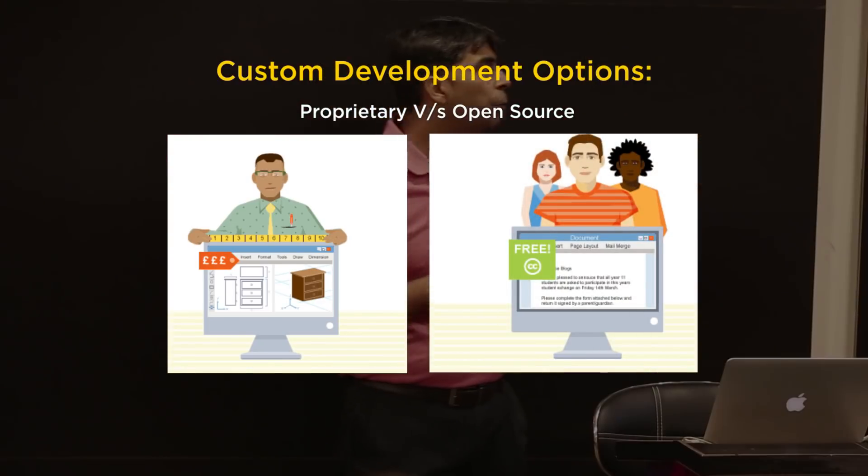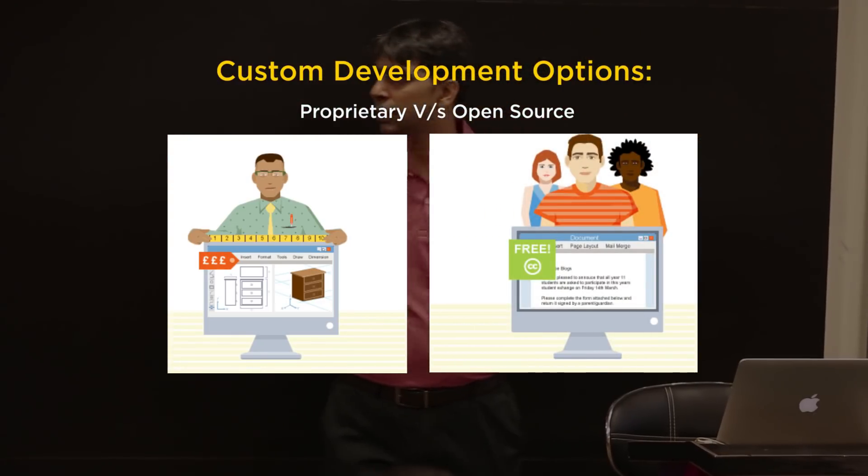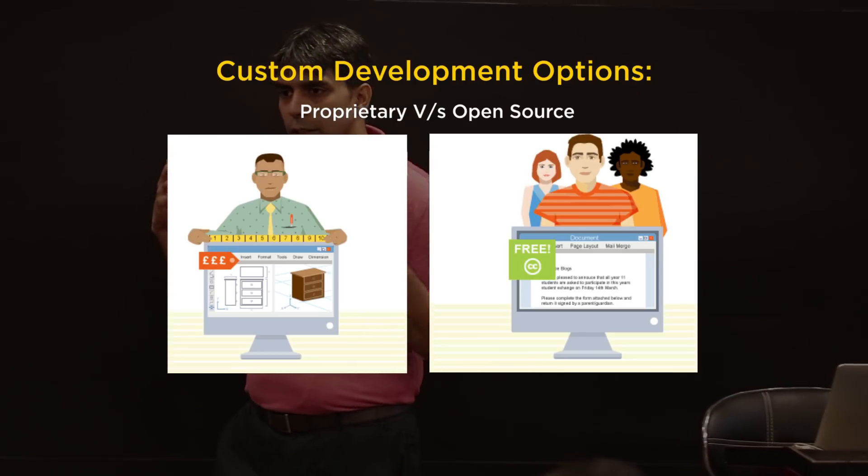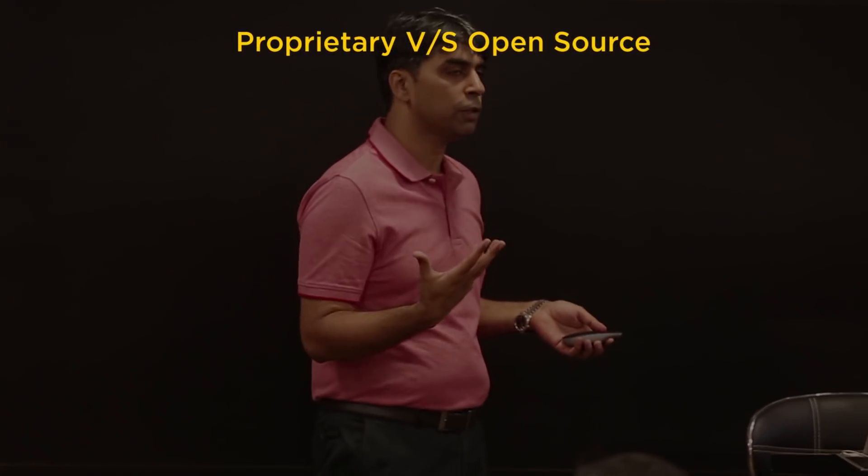What are the pros of open source? Open source is basically custom-developed pieces of code sitting on the internet that somebody's developed and you're free to use without charges. Myntra, for instance, was completely built on open source code — somebody else's code sitting somewhere that they used, customized, and used free of cost.